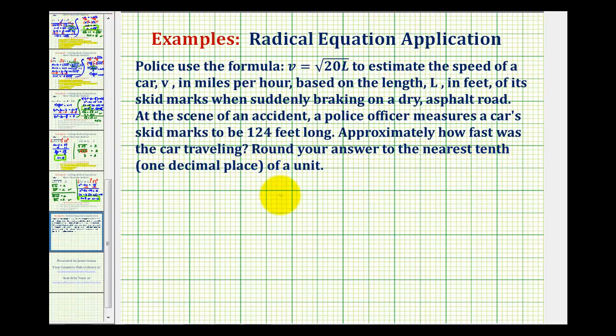Well, in this problem we're given the formula V equals the square root of 20L, where V represents the speed of the car and L represents the length of the skid mark. And the police officer measures the skid mark to be 124 feet long.